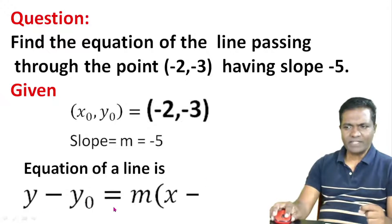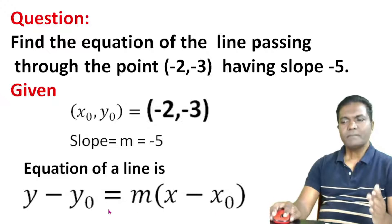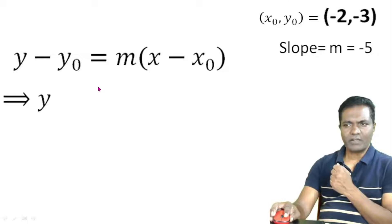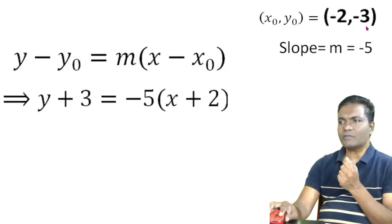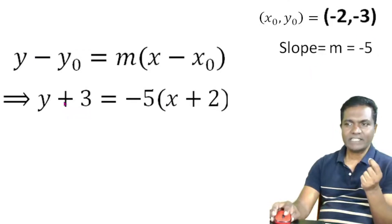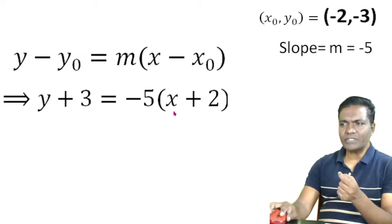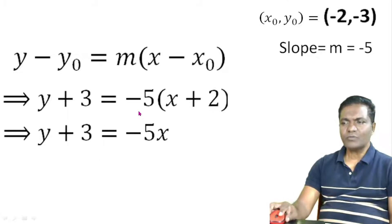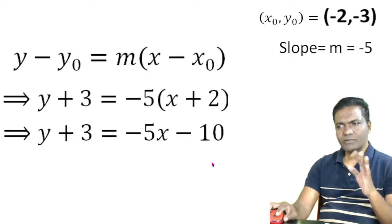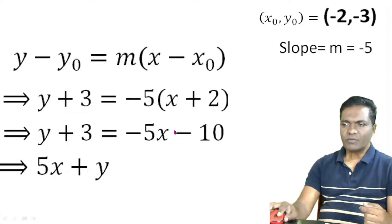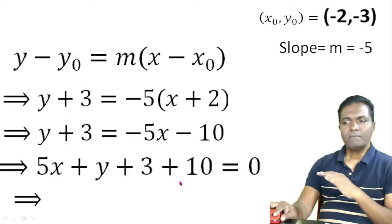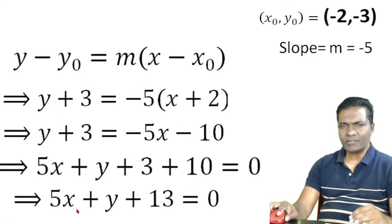Using y minus y₀ equal to m into x minus x₀, substitute: y minus (-3) gives y plus 3, and m is -5, x minus (-2) gives x plus 2. Simplify: y plus 3 equal to -5(x plus 2), which gives y plus 3 equal to -5x minus 10. Bringing all terms to one side: 5x plus y plus 13 equal to 0. This is the required equation.